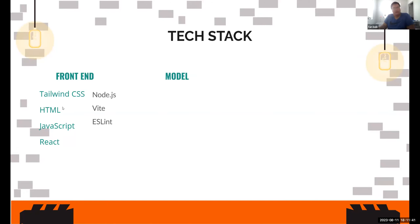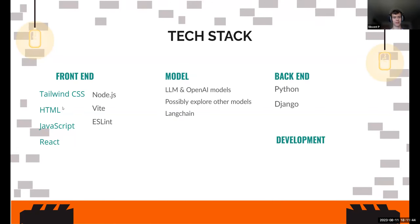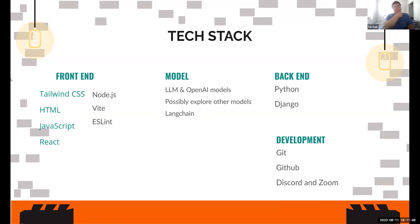For the front-end, we have HTML, JavaScript, React, and Node. For the backend, we have Python and Django. For development, we have Git and GitHub, and we use Discord and Zoom to communicate.